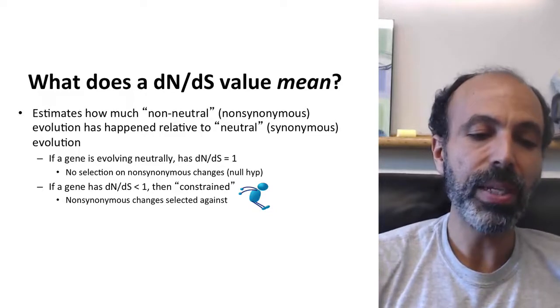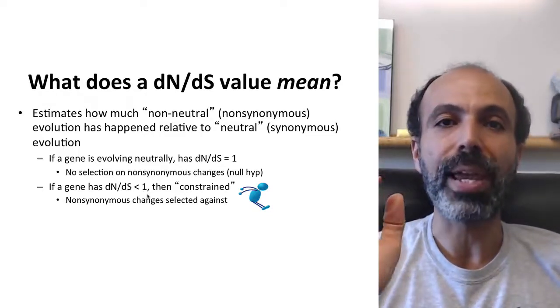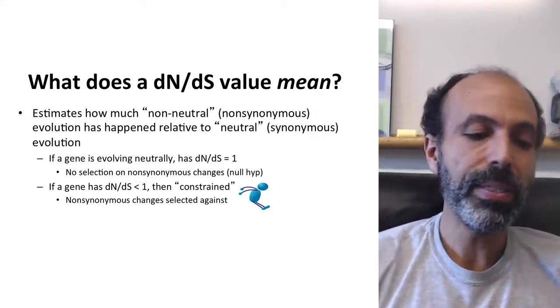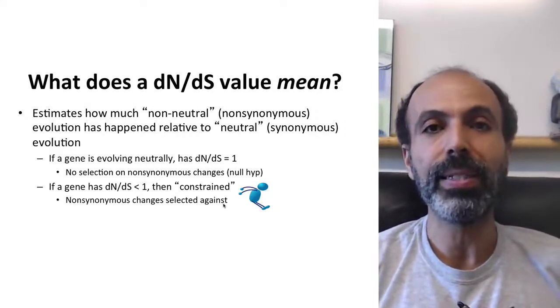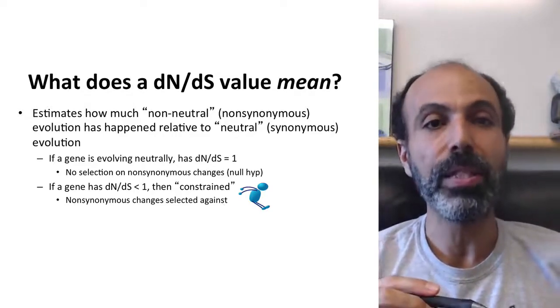Another possibility is that you have dN/dS well below one. That means that changes have been constrained. This is very typical. In this case, most non-synonymous changes that arise have been selected against. As we mentioned before with that flu virus example, this is pretty typical.